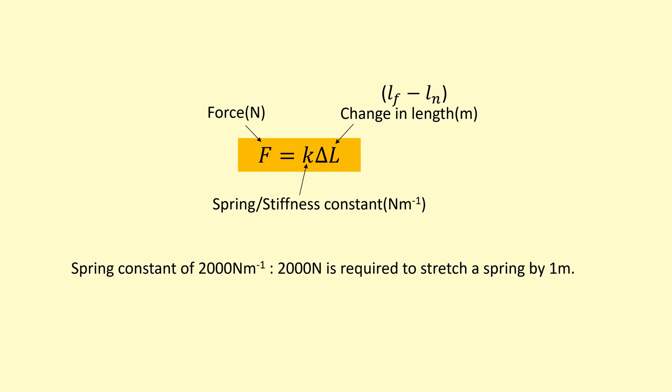As an example, a spring constant of 2000 newtons per meter would mean that you need 2000 newtons of force to stretch a spring by one meter. So that means the higher the spring constant, the stiffer the spring, wire, or rod, and you'd need more force to stretch it by the same amount.